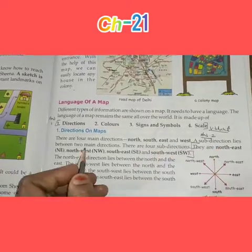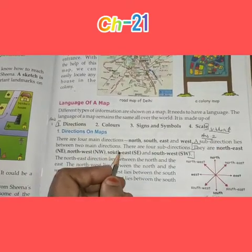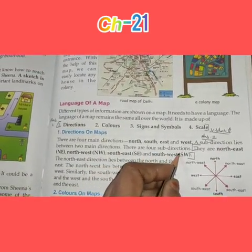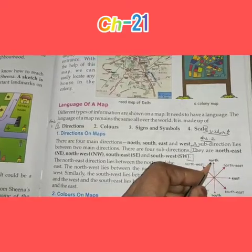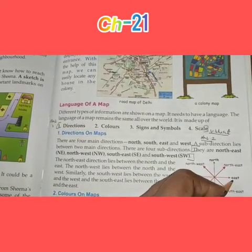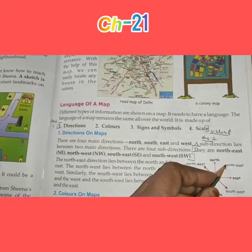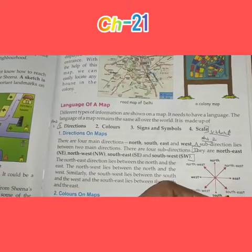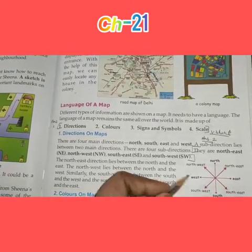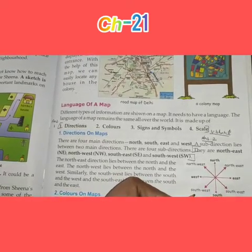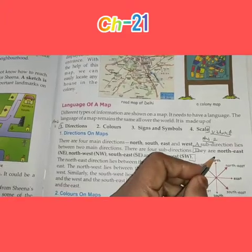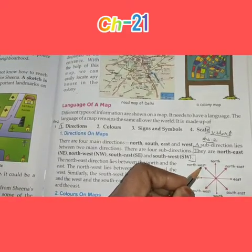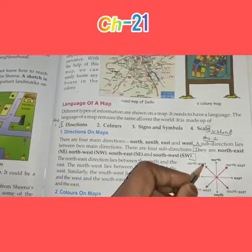A sub-direction lies between 2 main directions. There are 4 sub-directions. North-East lies in the center of North and East. South-East lies in the center of East and South. South-West lies in the center of South and West. And North-West lies in the center of West and North. These are the sub-directions.